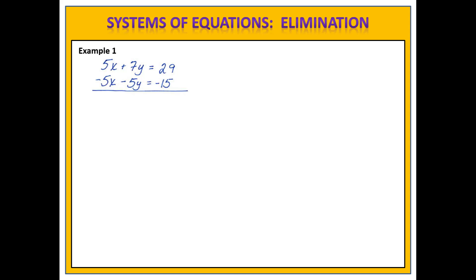Here's how it works. We simply go through and add the equations together. We have 5x minus 5x which gives us 0x. 7y minus 5y which gives us 2y. And 29 minus 15 which equals 14. Notice that we have 0x — we have no x term here at all. This equation is very simple, nothing more than 2y equals 14. Divide both sides by 2 and we find that y equals 7.